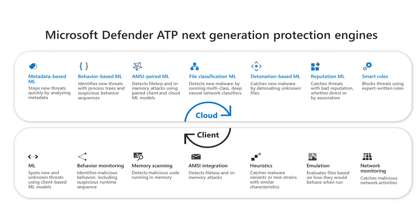Many of those engines are built into the client itself, and that provides advanced protection against the majority of threats in real time. When the client encounters an unknown threat, it will actually send metadata or the file itself to the cloud protection service, where more advanced protections examine new threats on the fly and integrate signals from other sources. This next generation protection engine ensures that it's accurate, real-time, and has the intelligence that's required.